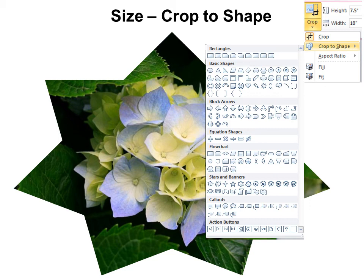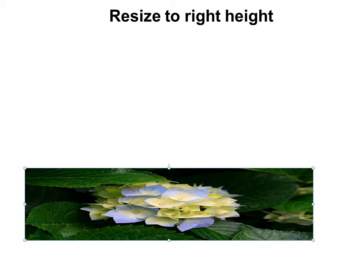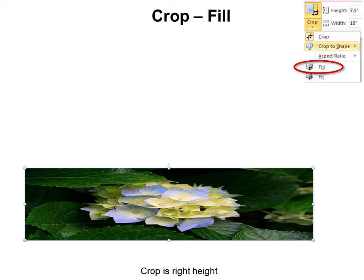And then if you click Crop again, you will be able to position whatever you're cropping — the picture in the background — you can move it around within that shape. You can also resize to the right height. So first, what you want to do is resize your picture. Now you can see the hydrangeas have gotten squished here, but they are the height that I want. So then we go to Crop Fill.